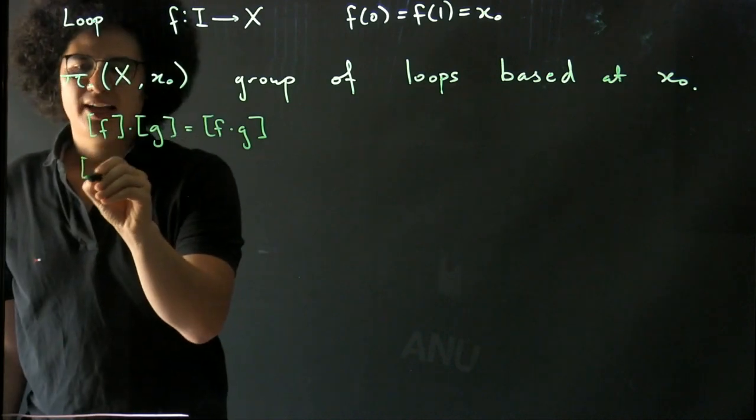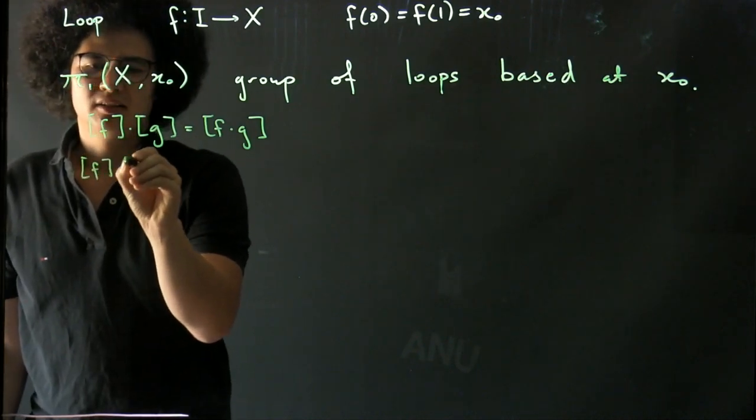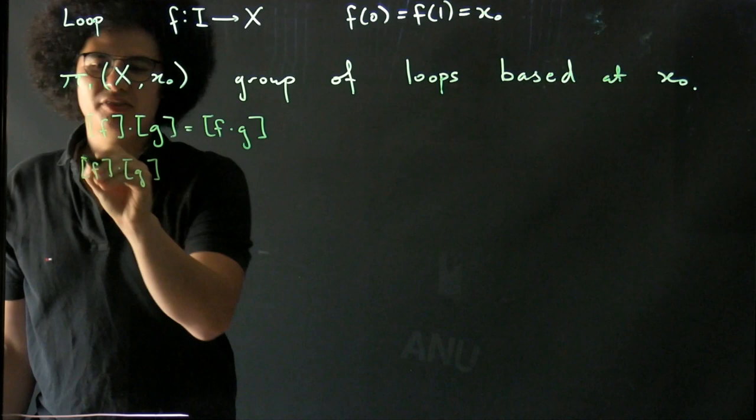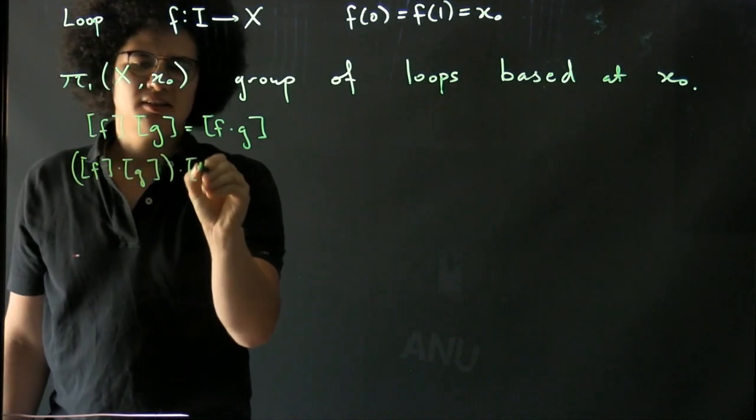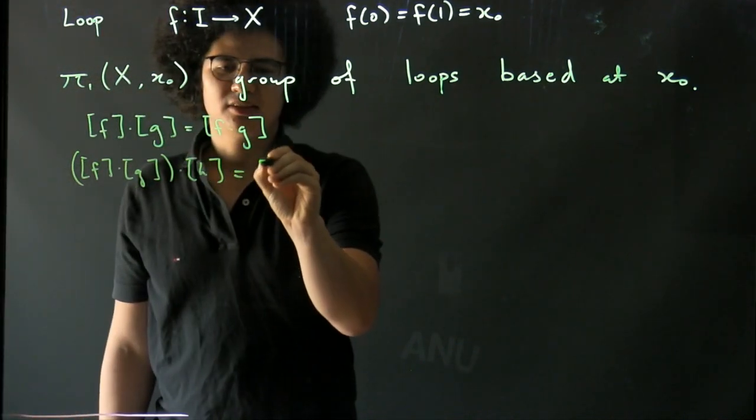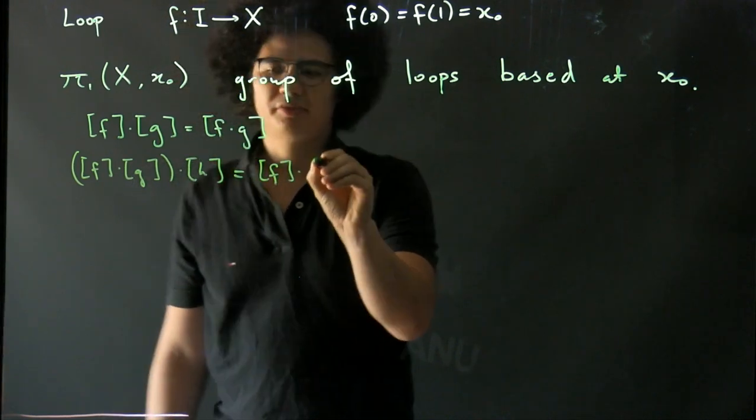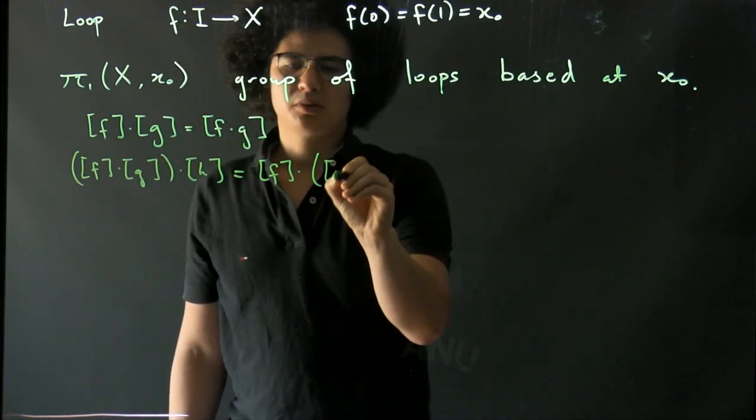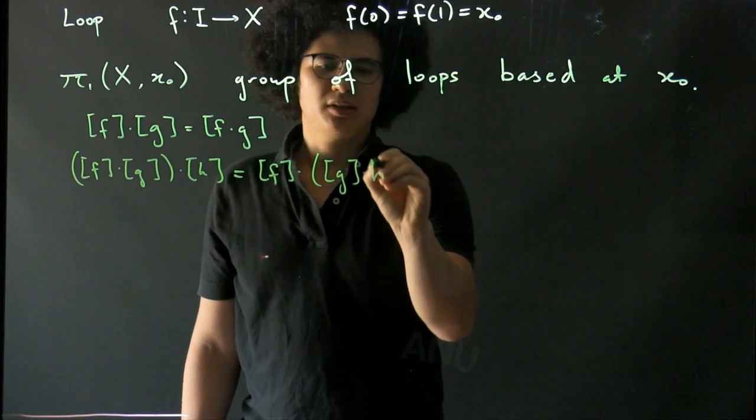Alright, we've seen that this composition that we've defined is associative. So F G composed with H.